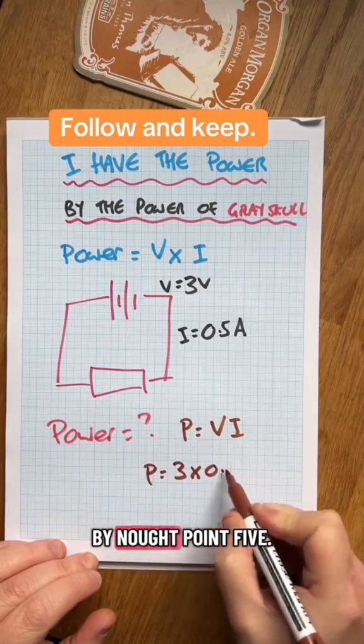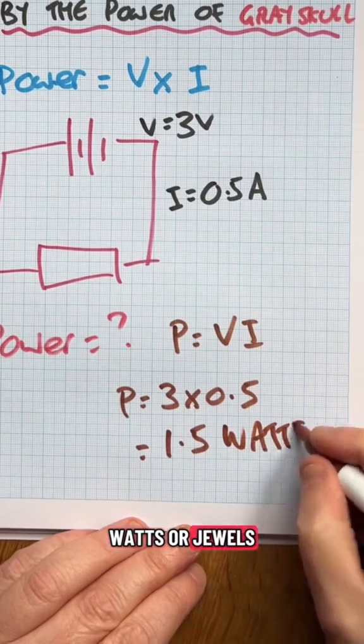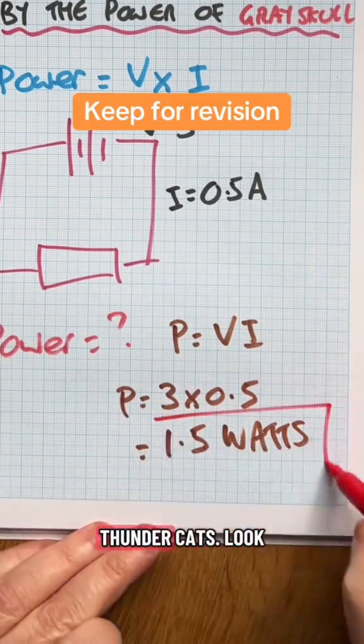The power in this circuit is going to be 3 times 0.5, which is 1.5. The unit of power is watts - joules per second. Power in a circuit, the power of Grayskull.